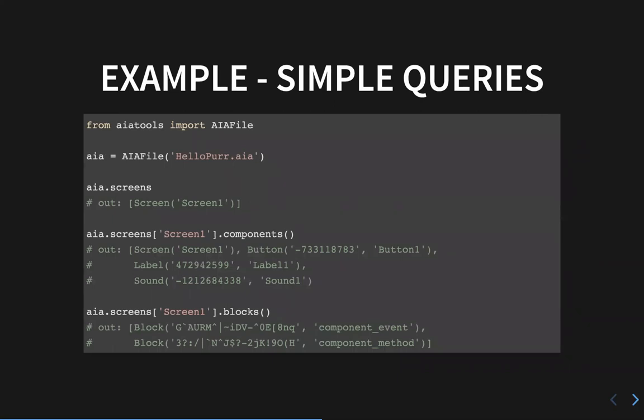I wanted to give examples of how AIA tools can work, starting with the very simple stuff and building up to more complicated stuff. The easiest thing you can do is load an AIA file. When you have the AIA file reference, you can query what screens are in the AIA, what components it contains, and what blocks it contains. You can do this for an individual screen, or execute these calls on the AIA itself to get results across all screens.